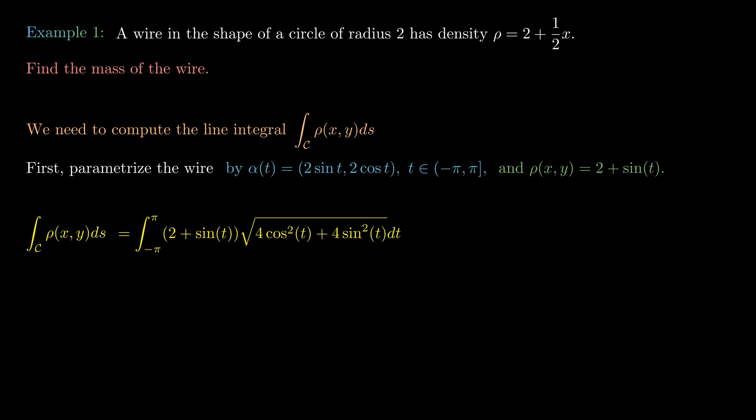The Pythagorean identity tells us that cos²t + sin²t = 1. So we're left with the integral from -π to π of 2(2 + sin t)dt, which equals 2[2t - cos t] from -π to π. This expands to 2[2π - cos(π) - 2(-π) + cos(-π)].